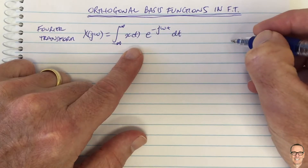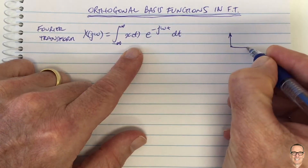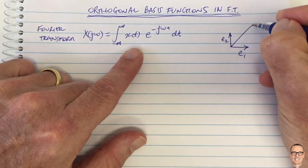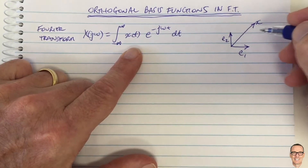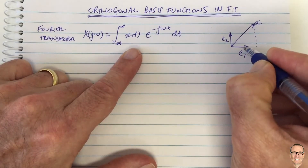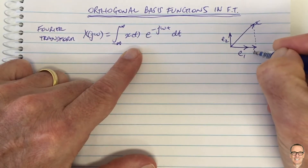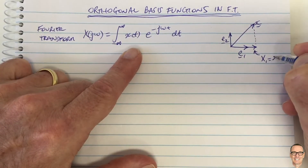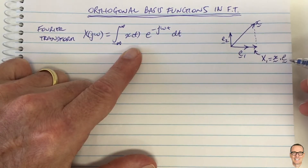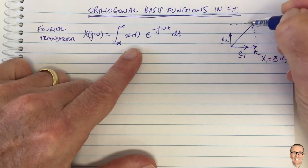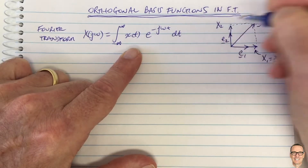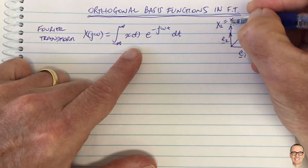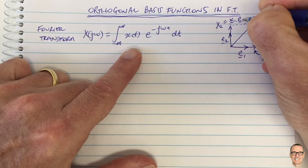In vectors, let's say we had two basis vectors which are at 90 degrees because they are orthogonal, perhaps e1 and e2. If we had a vector x, then we could find the projection of that vector x in the direction of e1, and we call this x1, which equals the vector x dot-producted with the basis vector e1. In the other direction, we get x2, and that length is x dot-producted or projected into the direction of e2.